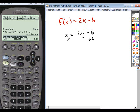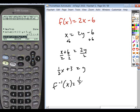So I'd add 6 to both sides, and then divide by 2. So I get 1 half x plus 3 is equal to y. So that is my inverse function, is 1 half x plus 3.